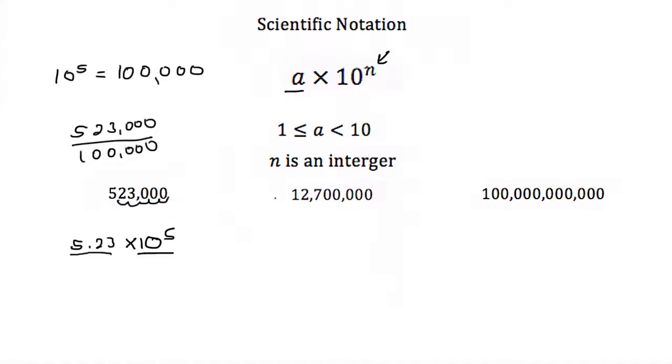So let's try this again. We have 12,700,000 and when I want to write this in scientific notation, well again our a has to be between 1 and 10 so we're going to end up with 1.27 and then it's times 10 to some exponent.